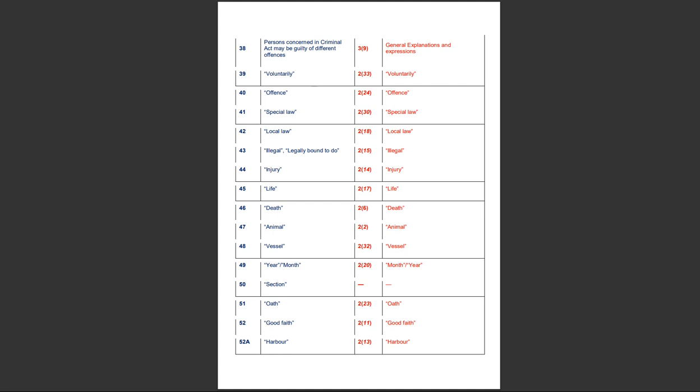Section 41 of the IPC deals with the term 'special law', whereas section 2, clause 30 of the BNS defines the term 'special law'. Section 42 of the Indian Penal Code defines the term 'local law', whereas section 2, clause 18 of the BNS Act 2023 defines the term 'local law'. Section 43 of the IPC defines the term 'illegal' — that is, legally bound to do — whereas section 2, clause 15 of the BNS defines the term 'illegal'. Section 44 of the IPC defines the term 'injury', whereas section 2, clause 14 of the BNS defines the term 'injury'.